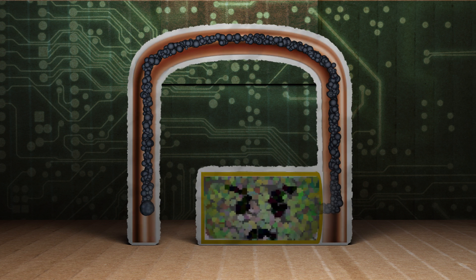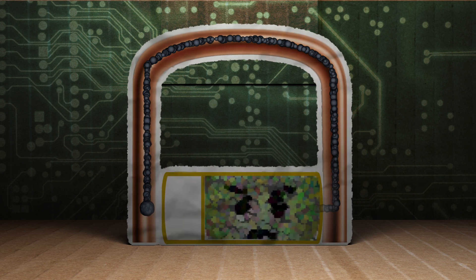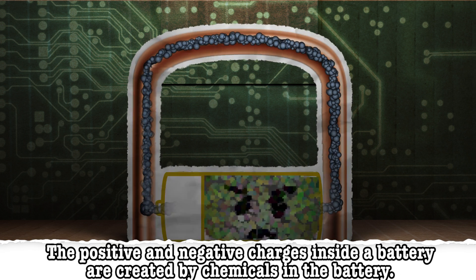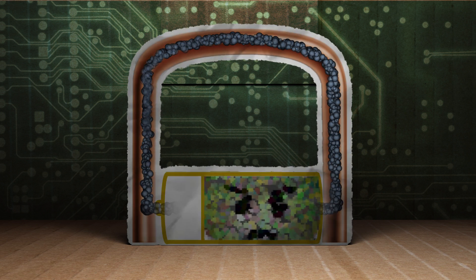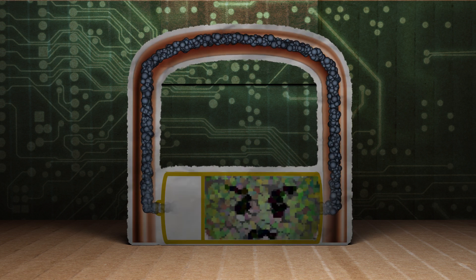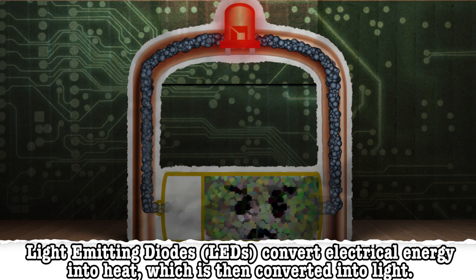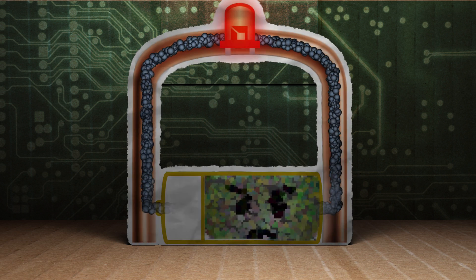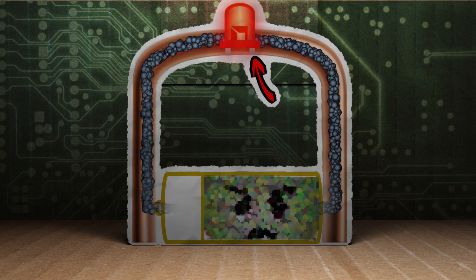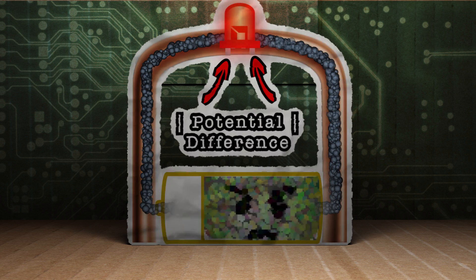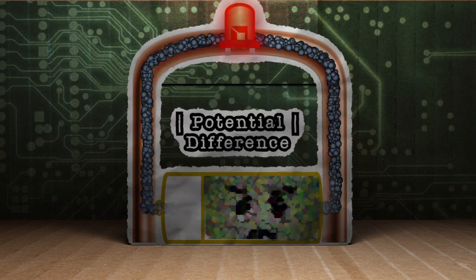But once it reaches the end, it has nowhere to go. But anyone that's seen a battery knows that it has both a negative and a positive end. So connecting the other end of the wire to the positive terminal of the battery allows the current to flow through the wire and through the battery, creating a basic example of a circuit. Now if we were to add an LED to the circuit — to light this LED, some of the potential energy from the electrons is used to convert the energy into light, so there's a loss of potential energy from here to here. The difference in potential energy between these two points is called potential difference, which is also known as a volt.